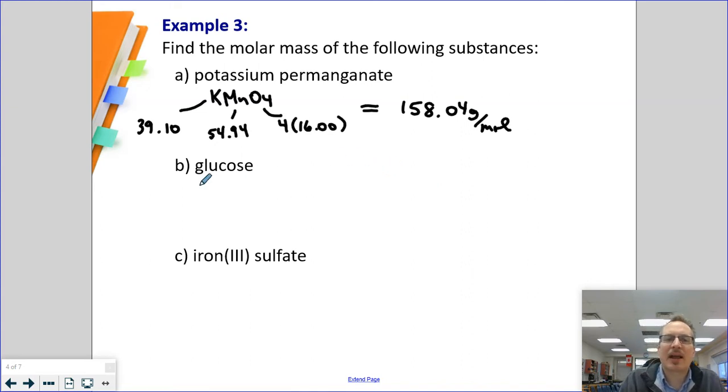Glucose is one of your memorized molecular compounds. So this is C6H12O6. And so, we have 6 times 12.01, and then we have 12 times 1.01, and then we have 6 times 16.